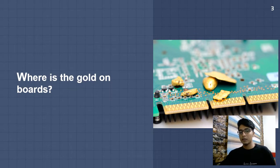Okay, so where is this gold on the boards? We know that our circuit boards are made out of plastic. The plastic cannot be plated by gold, but it can be plated by copper in the electroless process.